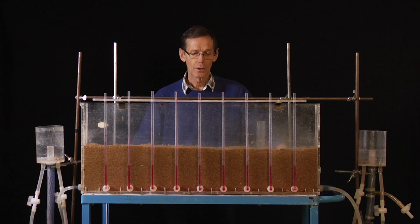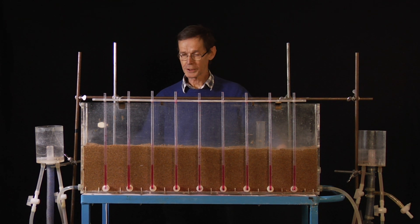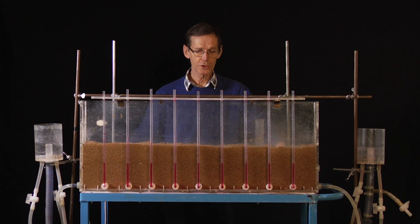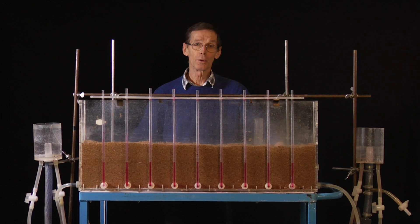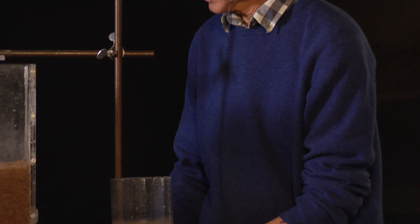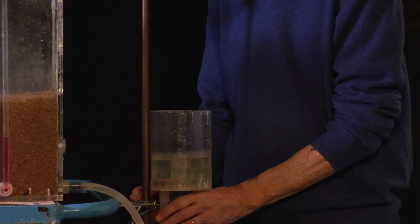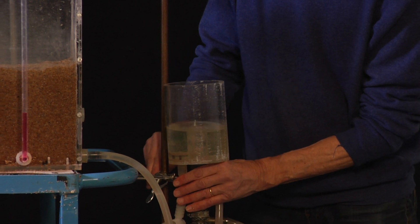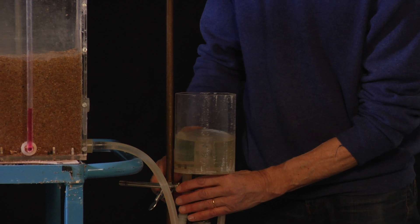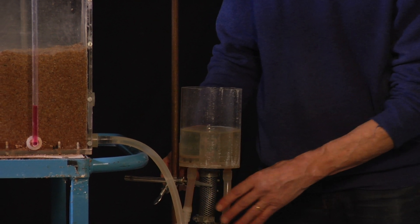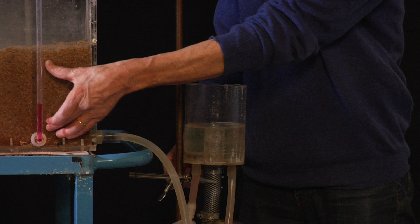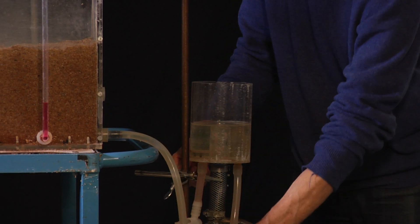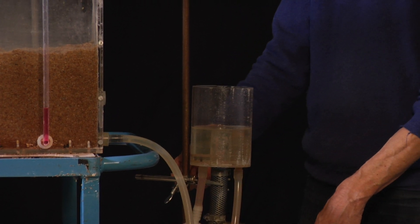For doing this, I start the circulation system and create a sloping water table. I lower on one side. I will measure the flow that is passing through the aquifer. On the other side, water is pumped to keep a constant level.